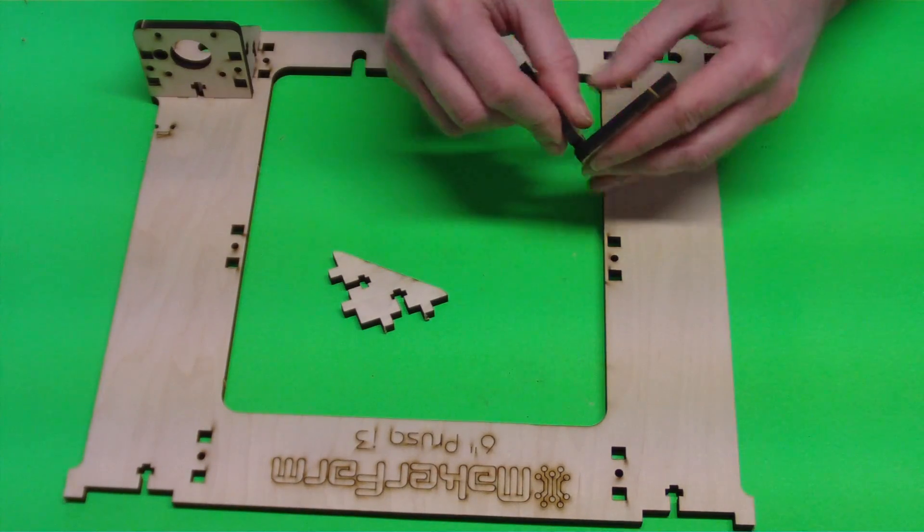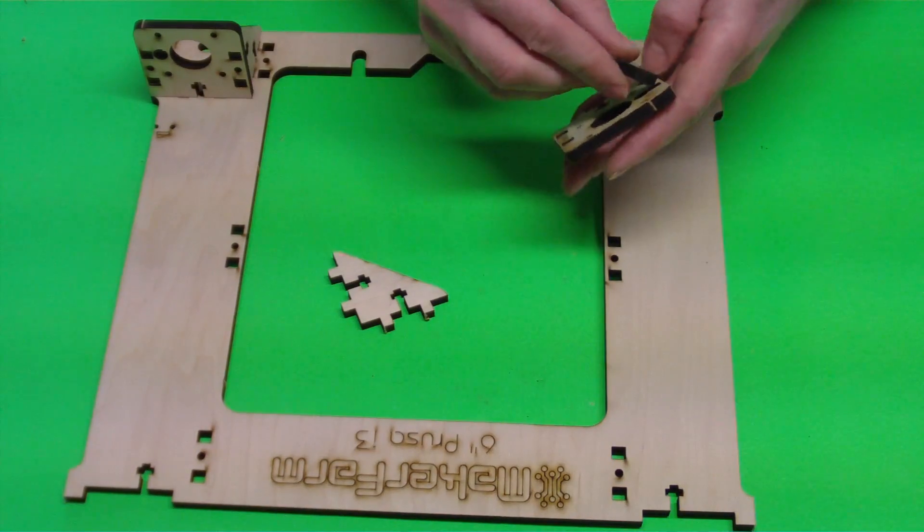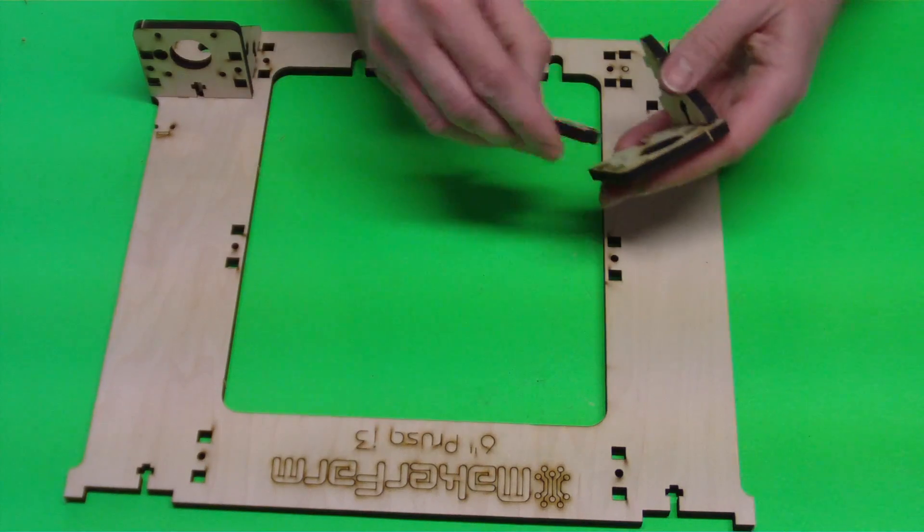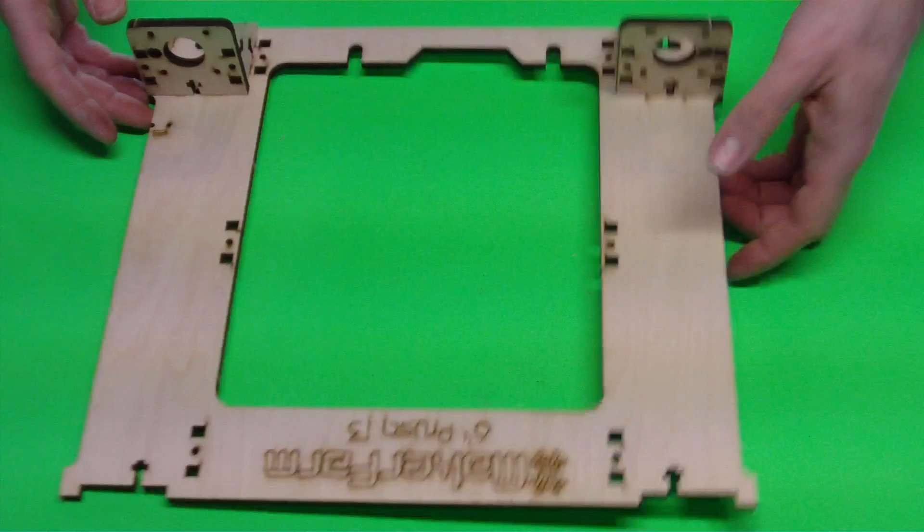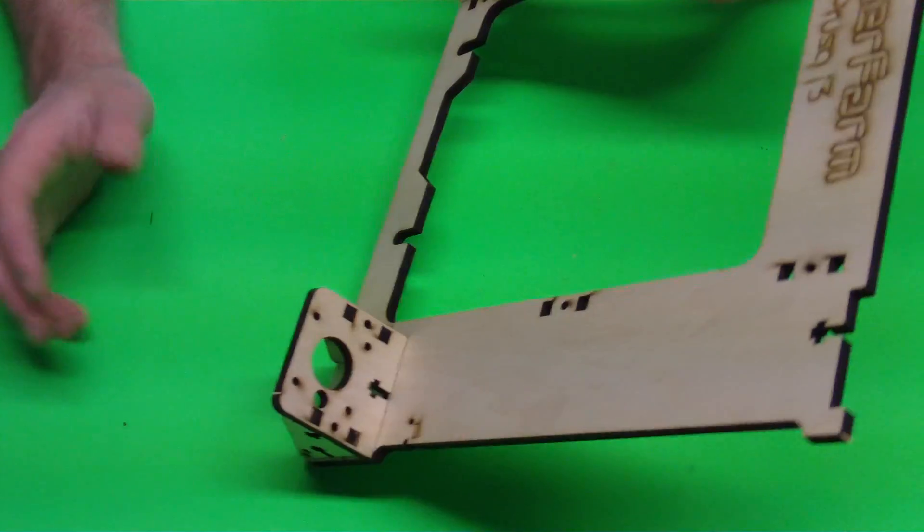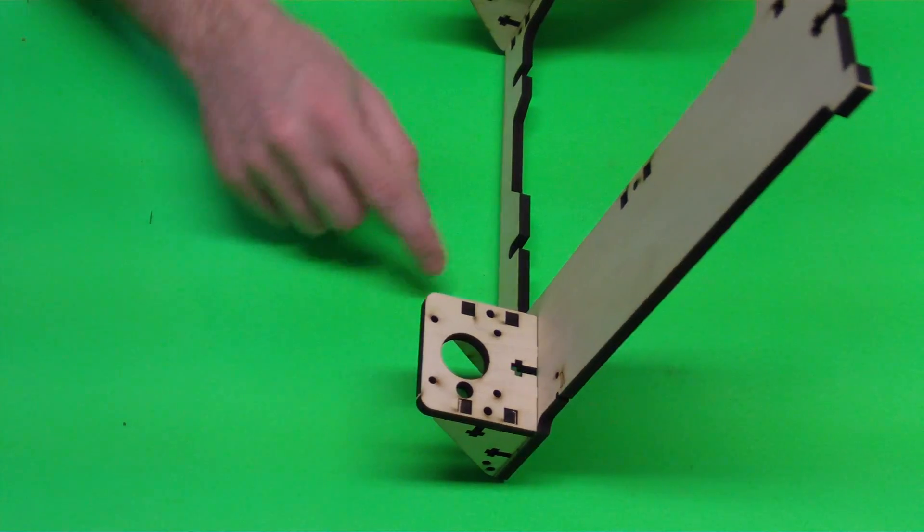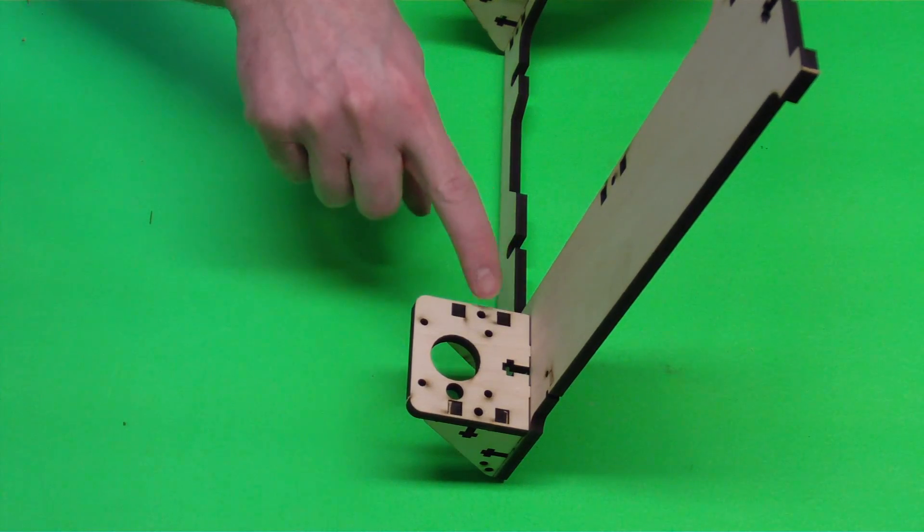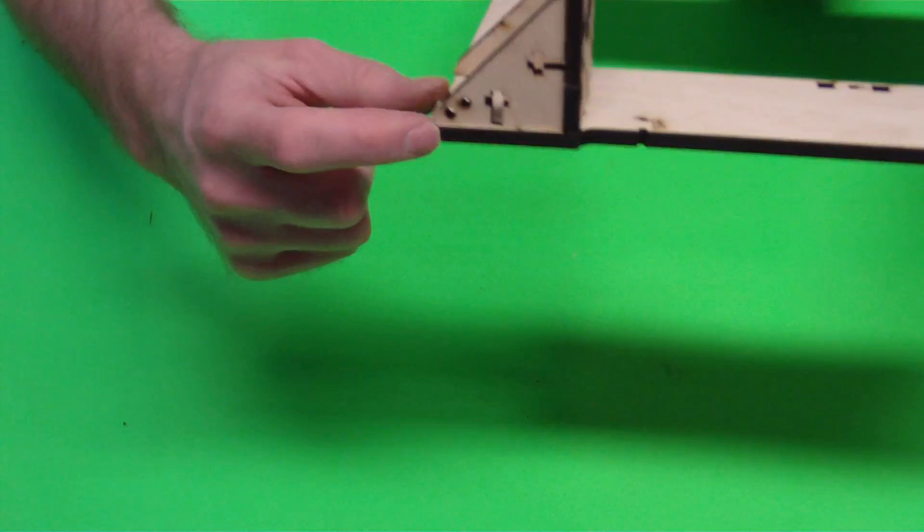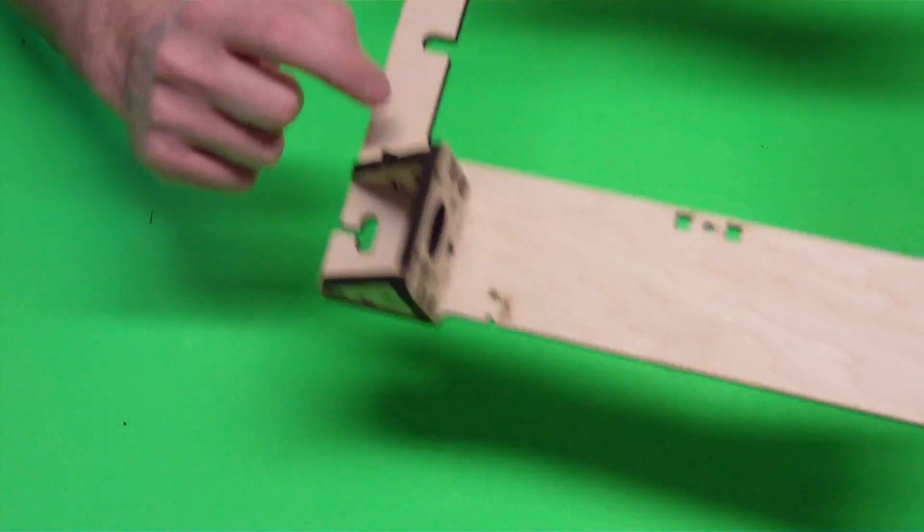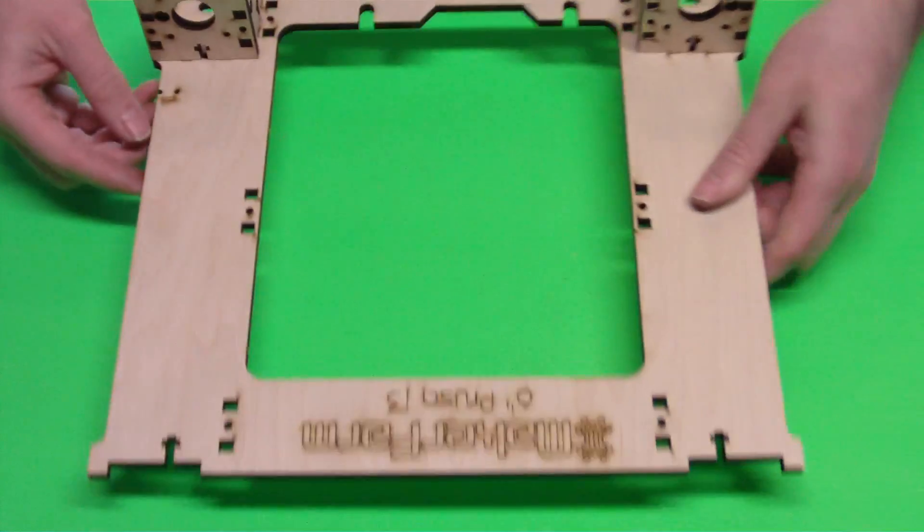We'll do the same thing for this other side. Just like that. I'm not going to put any screws in right now, just for time's sake. As you can see, you'll put three screws up top, and then one screw on each side. You'll do that for both of these.